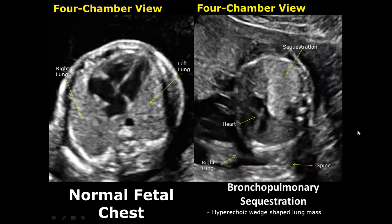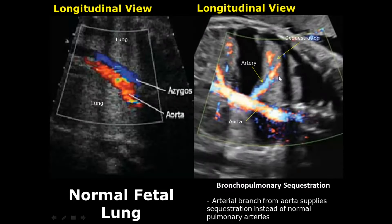A bronchopulmonary sequestration is defined as abnormal lung tissue that is disconnected from the tracheobronchial tree and is non-functioning. It usually appears as a wedge-shaped hyperechoic lung mass. On color Doppler, we will see a branch from the aorta supplying the sequestration — it does not receive blood supply from the pulmonary vessels.